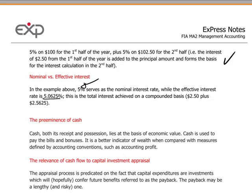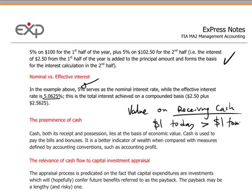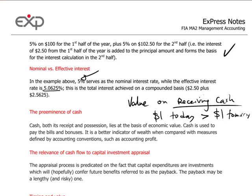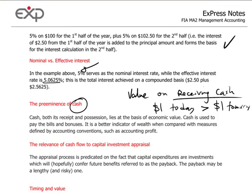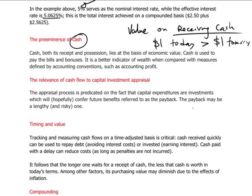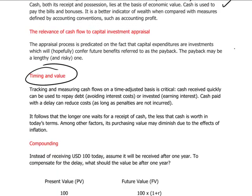When we talk about discounting of cash flows, what we're saying effectively is that value is based on receiving cash. Everybody likes to receive cash, and the quicker we receive it, the better off we are. In other words, a dollar received today is worth more than a dollar received tomorrow. So we're going to use cash as our basis of determining value. And also the timing of cash is going to be very important because of the timing of receipts and the timing of expenditures of cash.